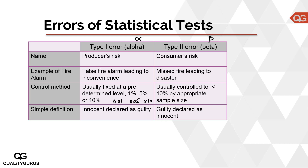Another analogy is a court judgment. When an innocent person is declared guilty, that is Type 1 error — producer's risk, the innocent being wrongly convicted. When a guilty person is declared innocent, that is Type 2 error. With this basic understanding of risks in acceptance sampling — Type 1 and Type 2 errors — let's move on and learn about a few more terms in acceptance sampling.